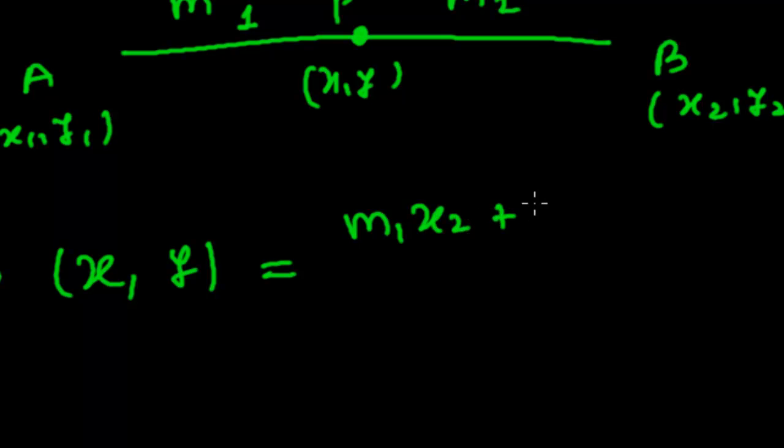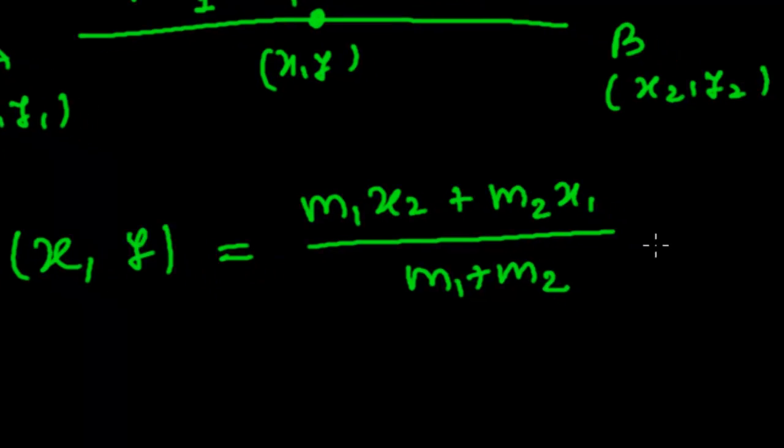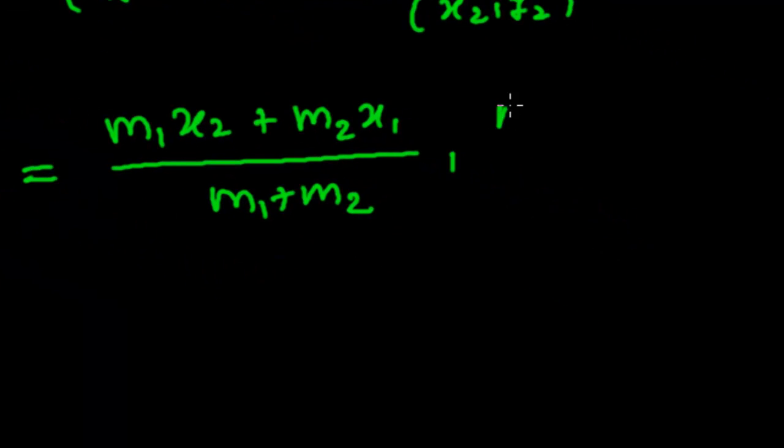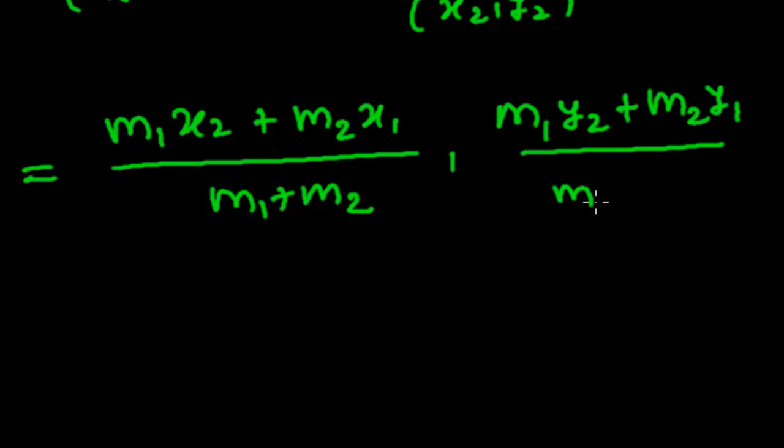And again m1*y2 plus m2*y1 whole divided by m1 plus m2. This is the formula.